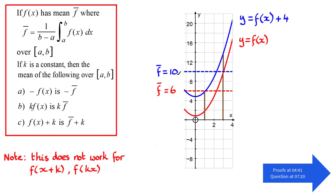Now you can appreciate why this works over the interval a to b. It will not work for f of x plus k because that causes the graph to shift negative k units in the x-direction, parallel to the x-axis, so the graph moves away from this interval. And f of kx is a stretch parallel to the x-axis of scale factor 1 over k, so the graph will either shrink or expand — the domain would have to change. But with our three transformations, we're still working in the same domain, in this case from 1 to 3.